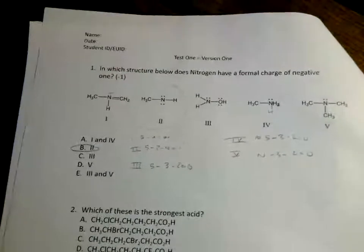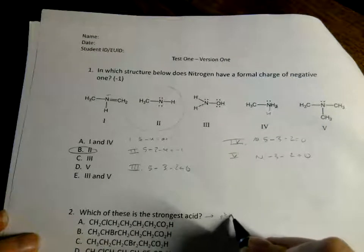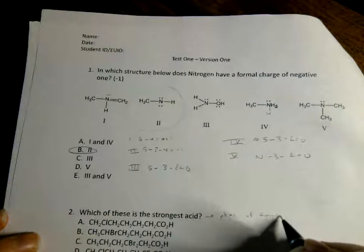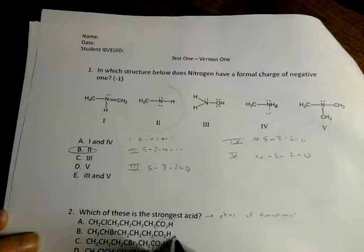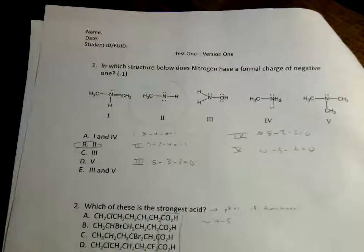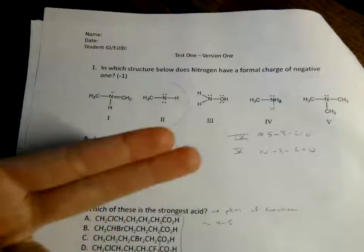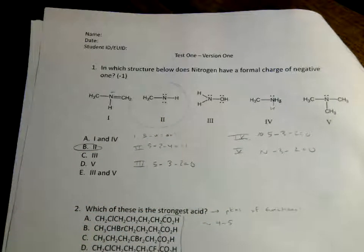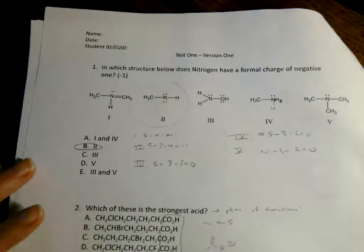For the second question — which of these is the strongest acid? When asking which is the strongest acid, you think about pKa's of different functional groups. But these are all the same functional groups; the main one here is the carboxylic acid, so all of these should have a pKa roughly in the 4 to 5 range. We have to consider other possible effects: the inductive effect, resonance, or anything else that will help stabilize the lone pair left behind when the carboxylic acid loses a proton.